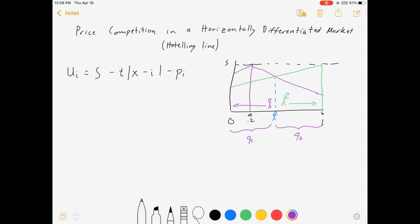The first thing they need to do is figure out their demand curve, which means they need to figure out where the blue guy is. So we need to figure out where the blue guy is.